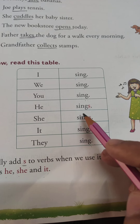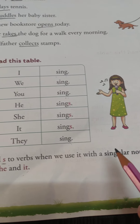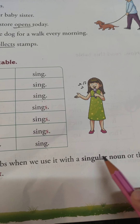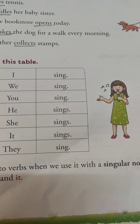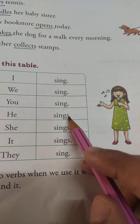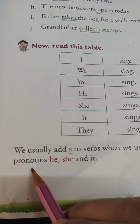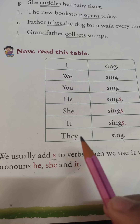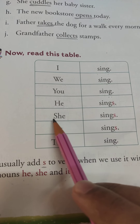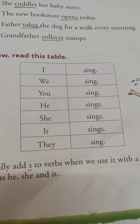Verbs mean action. When we use a verb with a singular noun — for example, Ayush sings very well — we add 's' because we are using the verb with a singular noun or the pronouns he, she, and it. He is a pronoun used for a boy or man, she is used for a woman or girl, and it is used for non-living things or animals.